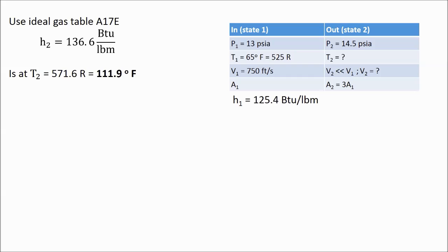Now that we know the enthalpy at the exit, we can use the ideal gas property tables again, this time to find the temperature at the exit. We find that the temperature at the exit is 571.6 Rankine or 111.9 degrees Fahrenheit.